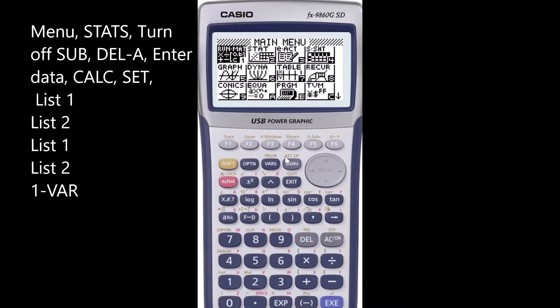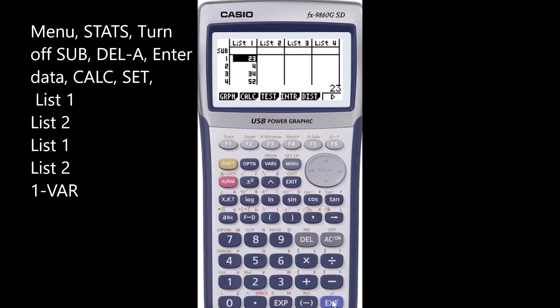From main menu, go to stats menu. You'll be given list 1, list 2, and so forth. You'll end up with this screen. You must turn the sub name field off, otherwise you'll end up with wrong results.